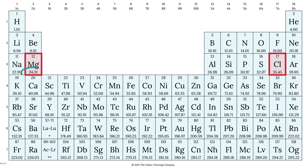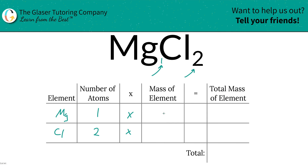Then we're going to multiply each of those number of atoms by the mass of the particular element — that's where the periodic table comes into play. So the mass of magnesium is 24.31, and chlorine is going to be 35.45. So 24.31 for magnesium, 35.45 for chlorine.